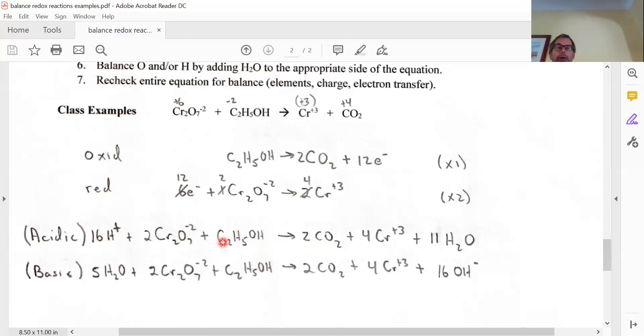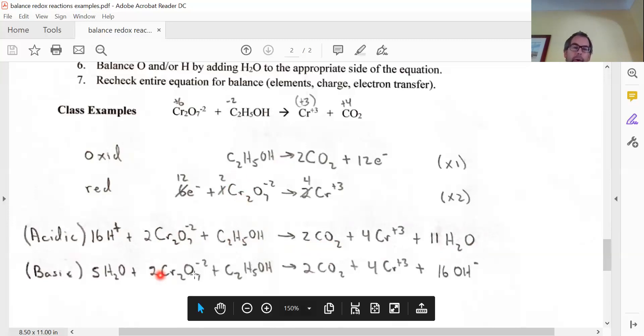So it looks like everything's balanced out, but recheck that to make sure. Okay. What if I were doing that under basic conditions? Again, I get through my half reactions. I know what numbers go in front of the coefficients. So I get the 2, 1, 2, 4 right there.